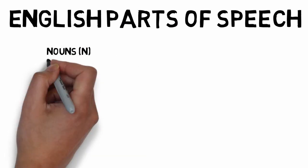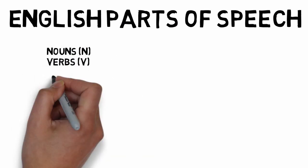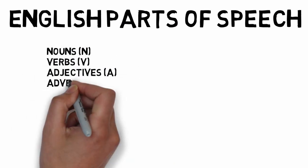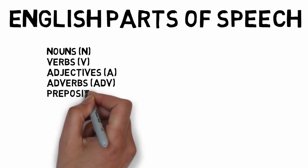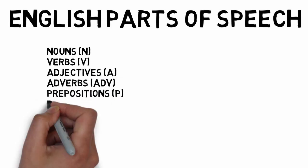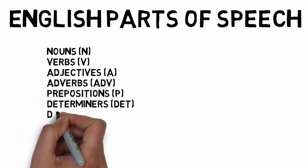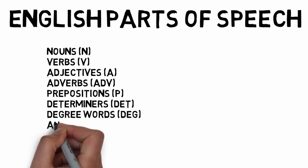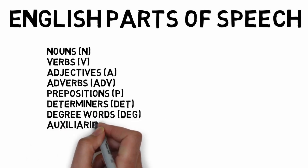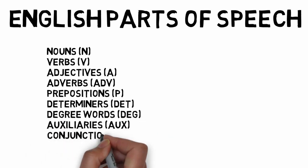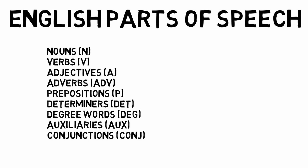The nine parts of speech in English are: nouns, verbs, adjectives, adverbs, prepositions, determiners, degree words, auxiliaries, and conjunctions. Let's start with the more commonly known word classes.